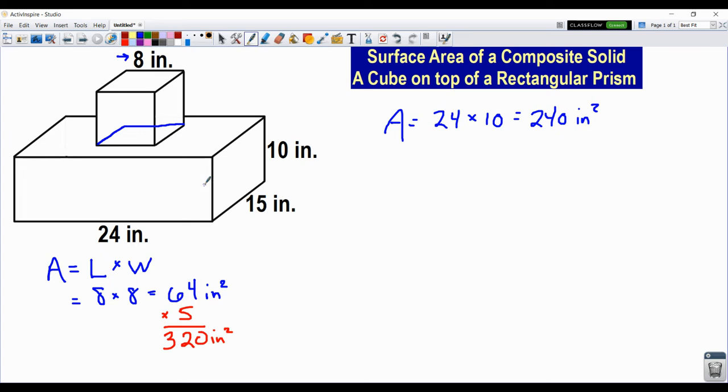Now what's great about a box is if the front of the box is 240, guess what the back of the box is. So I'm not going to show you the math again. I'm just going to write another 240 square inches right under it.